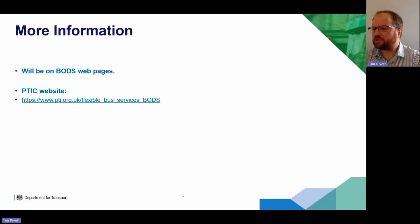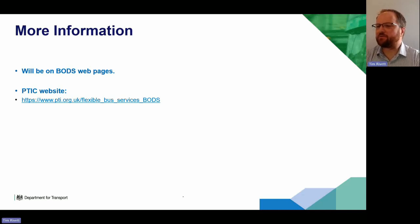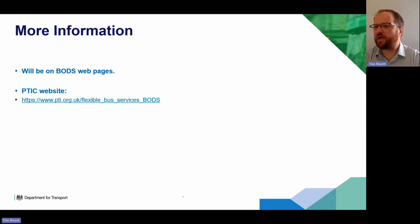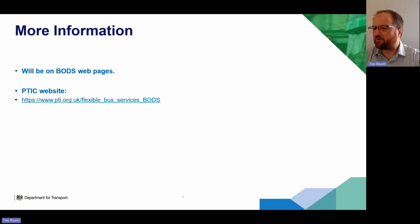Question from Claire: can complex examples be provided that join a journey pattern and a flexible journey pattern via interchange XML? Yes, absolutely — there will be an example of that in the set of examples being provided on the PTRC website.